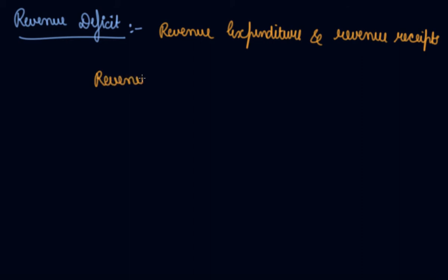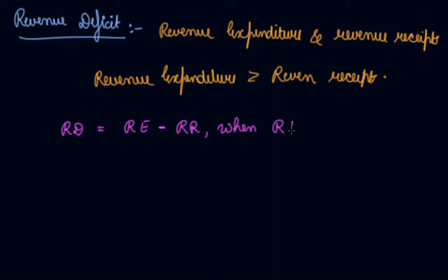You can write this as RD equals revenue expenditure minus RR, when revenue expenditure is greater than revenue receipts. RD is revenue deficit, RE is revenue expenditure, and RR is revenue receipts.